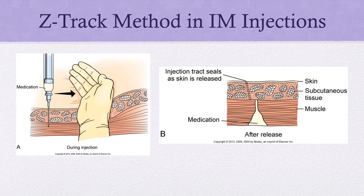Another technique we're going to look at is the Z-track method. When you insert a needle into the tissue, it leaves a very small hole or track. Small amounts of medication can sometimes leak backwards through this track and be absorbed into other tissues. With the Z-track method for IM injections, we pull that skin and tissue before we inject, causing the needle track to take the shape of the letter Z — which gives the procedure its name.